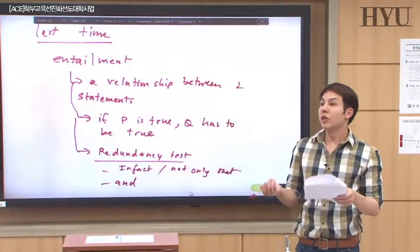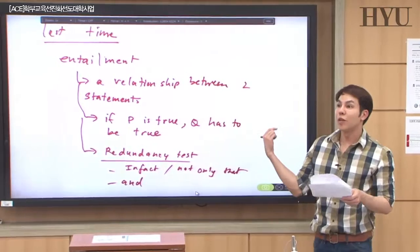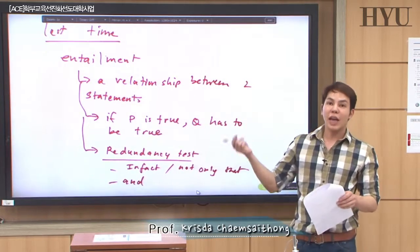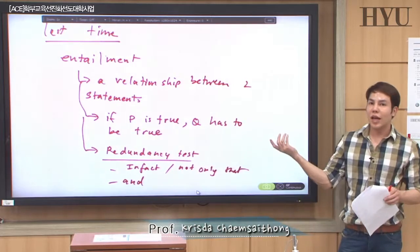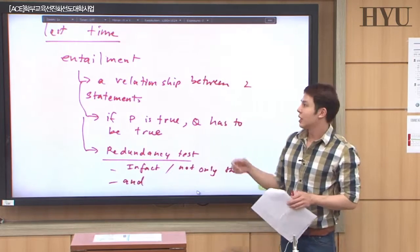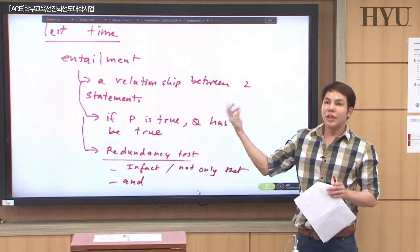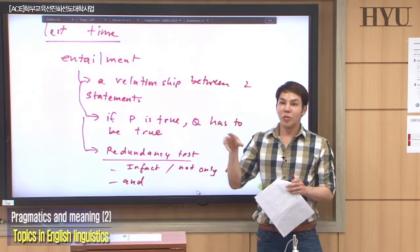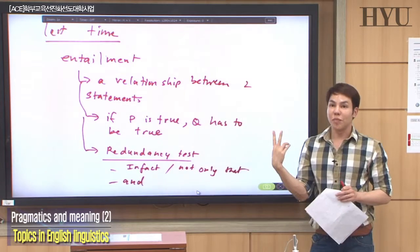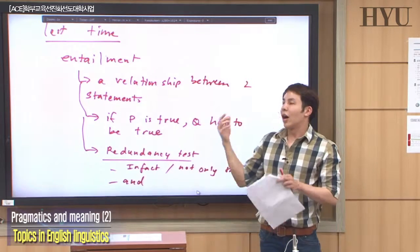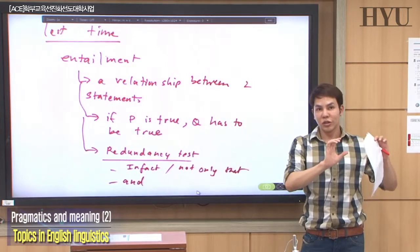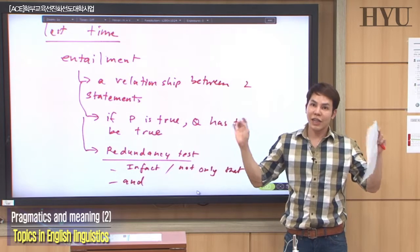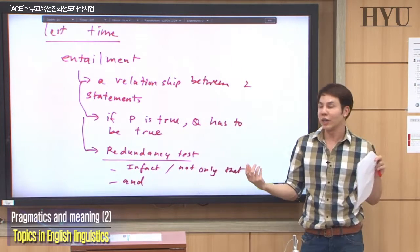Today we'll continue with entailment. Let me do a recap of what entailment is. Entailment, as we studied last time, is a relationship between two statements. If one statement is true, the other statement must always be true. That's the kind of relationship we call entailment.